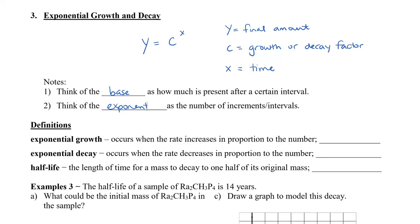Before we continue, let's take a look at three definitions. So exponential growth, this occurs when the rate increases in proportion to the number, meaning in proportion to how much you already have. So in this case, this is where c is greater than 1 because we're going to be increasing. Exponential decay occurs when the rate decreases in proportion to the number. So in this case, the c value will be less than one. And there's one special time that you need to know, and it's called half-life. So half-life is a length of time for a mass to decay to one-half of its original mass. In this case, c is going to be a half.